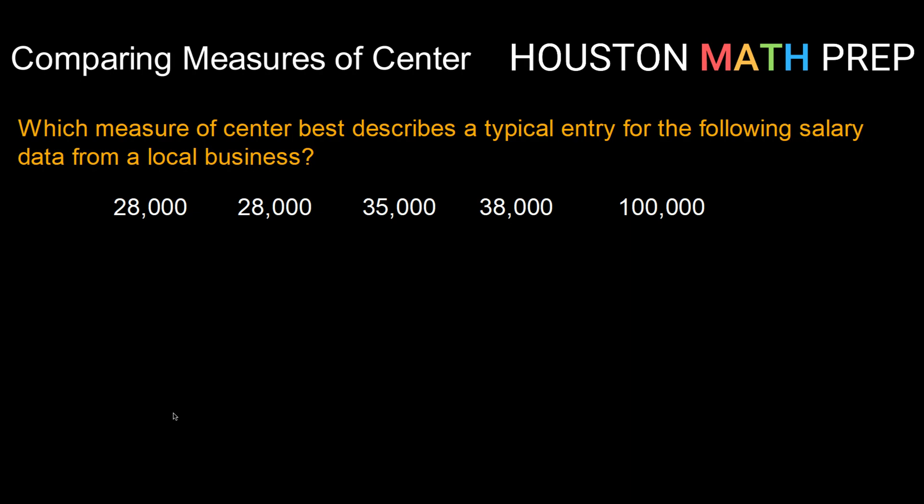So we're going to go ahead and calculate all three of our known measures of center - mean, median, and mode - and determine which of them seems to show us the most typical data and talk about why.